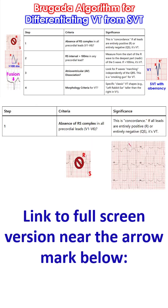Step 1: absence of RS complex in all precordial leads V1 to V6 — that is concordance. If all leads are entirely positive (only R wave) or entirely negative (QS complexes), it is ventricular tachycardia. Either positive concordance or negative concordance in precordial leads is suggestive of ventricular tachycardia.